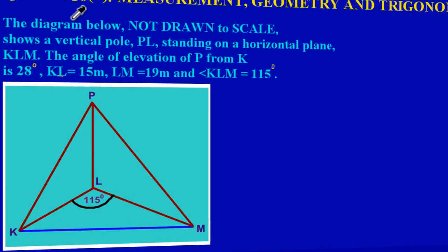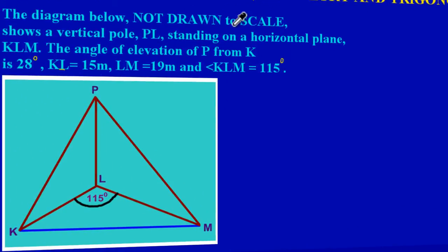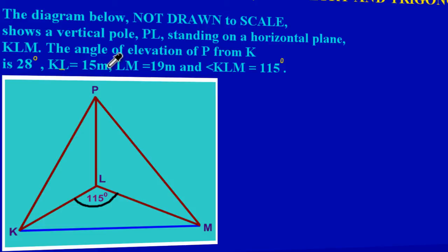Now in the question it states: the diagram below, not drawn to scale, shows a vertical pole PL standing on a horizontal plane KLM. The angle of elevation of P from K is 28 degrees. KL is equal to 15 meters, LM is equal to 19 meters, and the angle KLM is equal to 115 degrees.